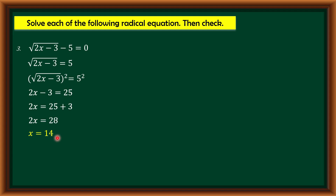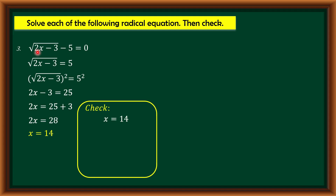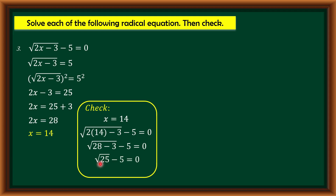Let us check if x = 14 satisfies the equation square root of 2x minus 3 minus 5 equals 0. Substituting: square root of 2 times 14 minus 3 minus 5. Since 2 times 14 is 28, we get square root of 28 minus 3 minus 5, which is square root of 25 minus 5. The square root of 25 is 5, so 5 minus 5 equals 0, which is true. The solution set is {14}.